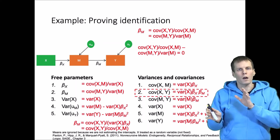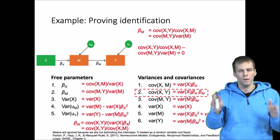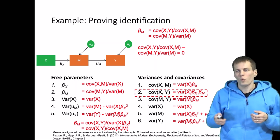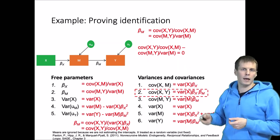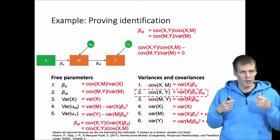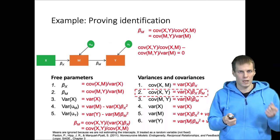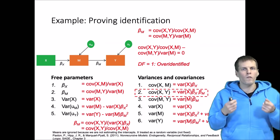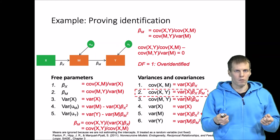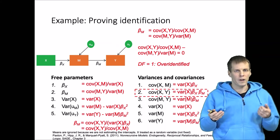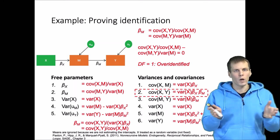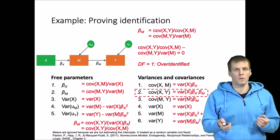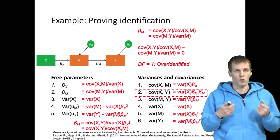If this calculation does not equal zero in the population, then the model is misspecified — solving for one parameter using two different ways would lead to two different solutions, telling us the model is not correct for the data. In small samples this difference will never be exactly zero, so we ask whether the difference from zero can be attributed to chance only. This is just one constraint, one degree of freedom, and we would test this covariance constraint using the chi-square test with one degree of freedom. If we have more constraints, we use the chi-square with more degrees of freedom accordingly.